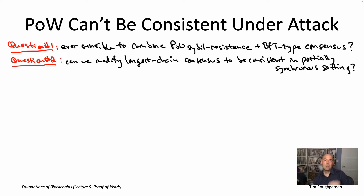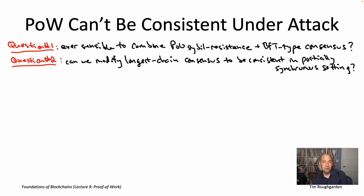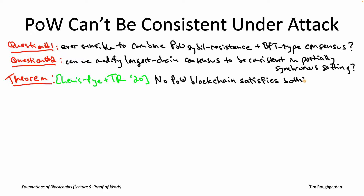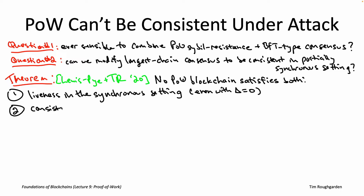The impossibility result I'll state next basically answers both of these questions in the negative. It is generally not sensible to combine proof of work with BFT-type consensus, and there's no obvious way to modify Nakamoto consensus — proof-of-work civil resistance with longest chain consensus — in order to get non-trivial guarantees in the partially synchronous model.